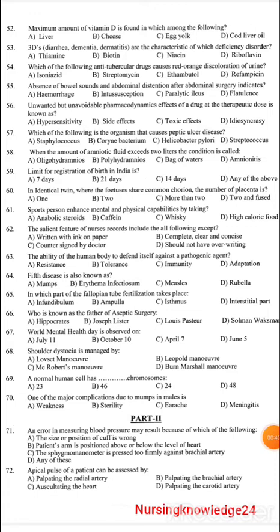Which of the following anti-tubercular drugs causes red-orange discoloration? Options: isoniazid, streptomycin, ethambutol, or rifampicin. The answer is rifampicin.